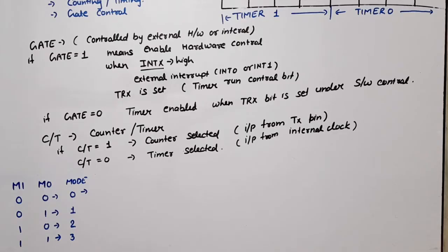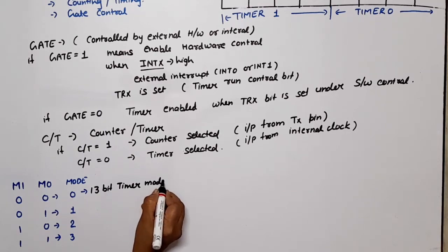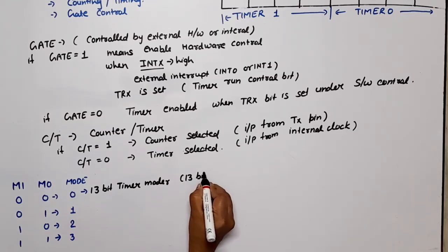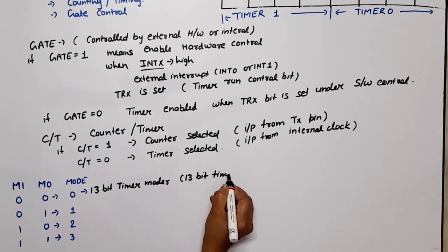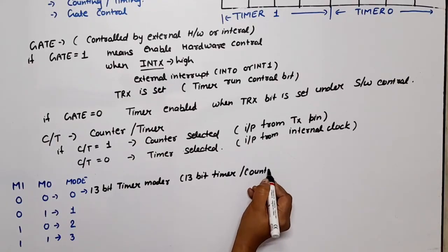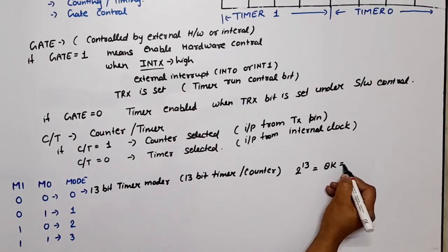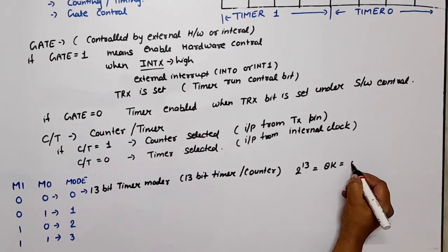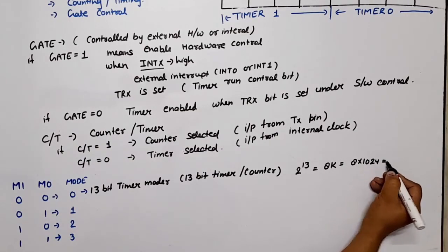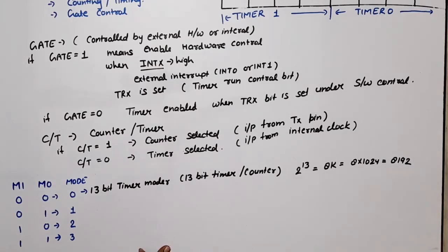Let's see what happens in mode 0. In case of mode 0, this works as 13-bit timer mode. This works as 13-bit timer/counter. If this works as a counter, the maximum count value will be 2 raised to power 13, which means we can write 8K, which is 8 times 1024 equals 8192. This is the maximum count value.